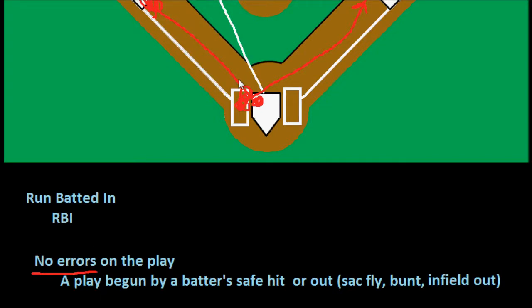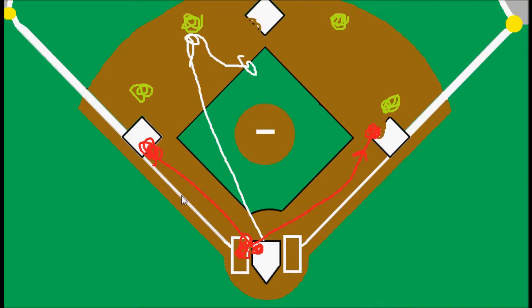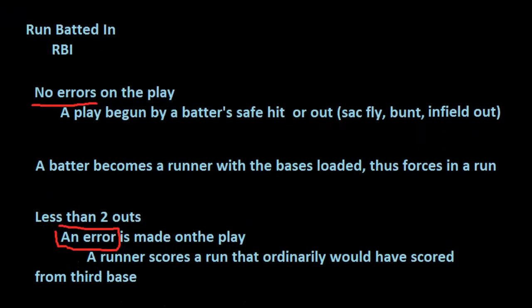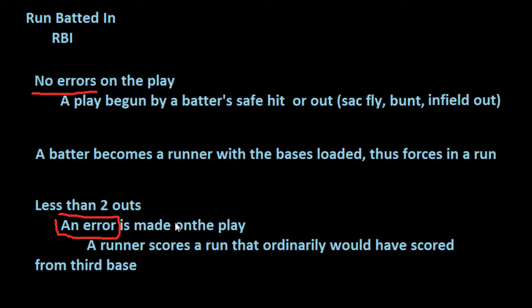If we just had the first possibility as a way to get an RBI, this run would not count as an RBI for the batter because there would have been an error on the play. Even though it's pretty obvious that the run would have scored — it was because of the batter putting the ball into play that the run scored. And that's exactly why we give batters credit for RBIs in the first place. So in this situation, this third method makes complete sense to award the batter with the RBI.